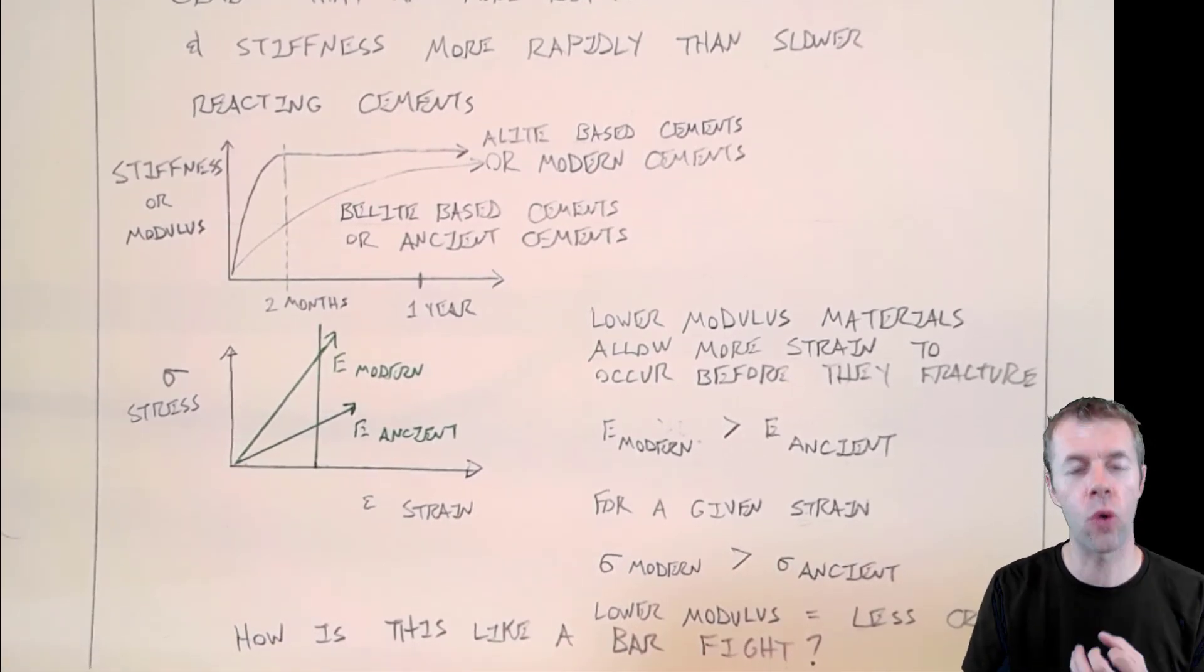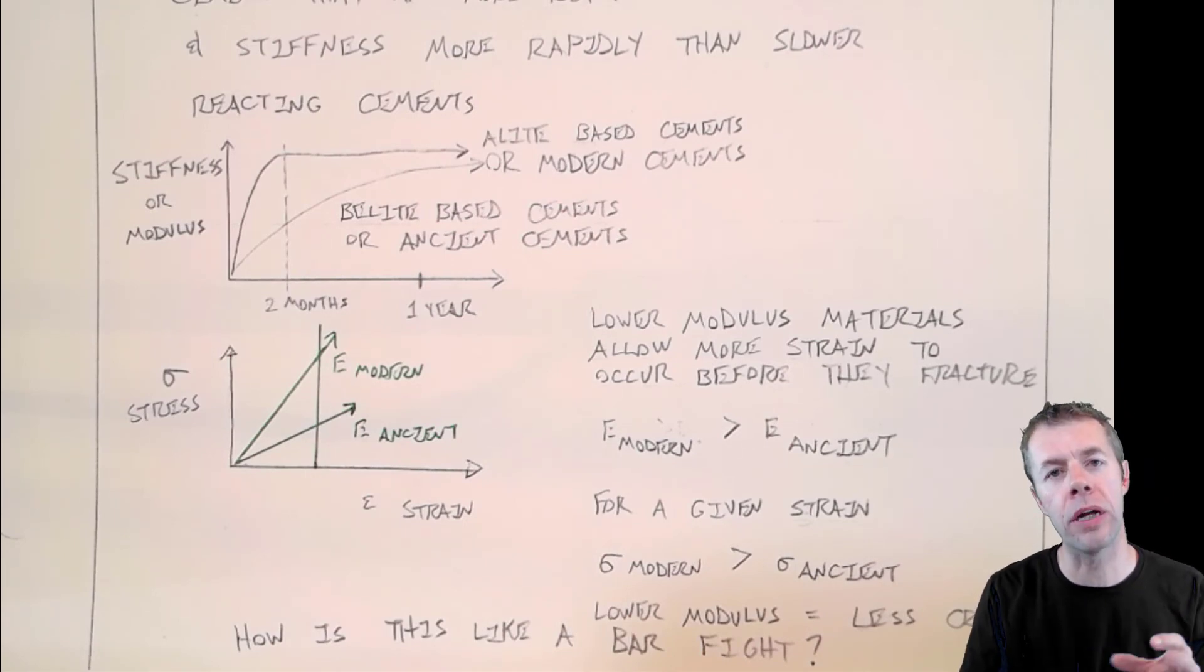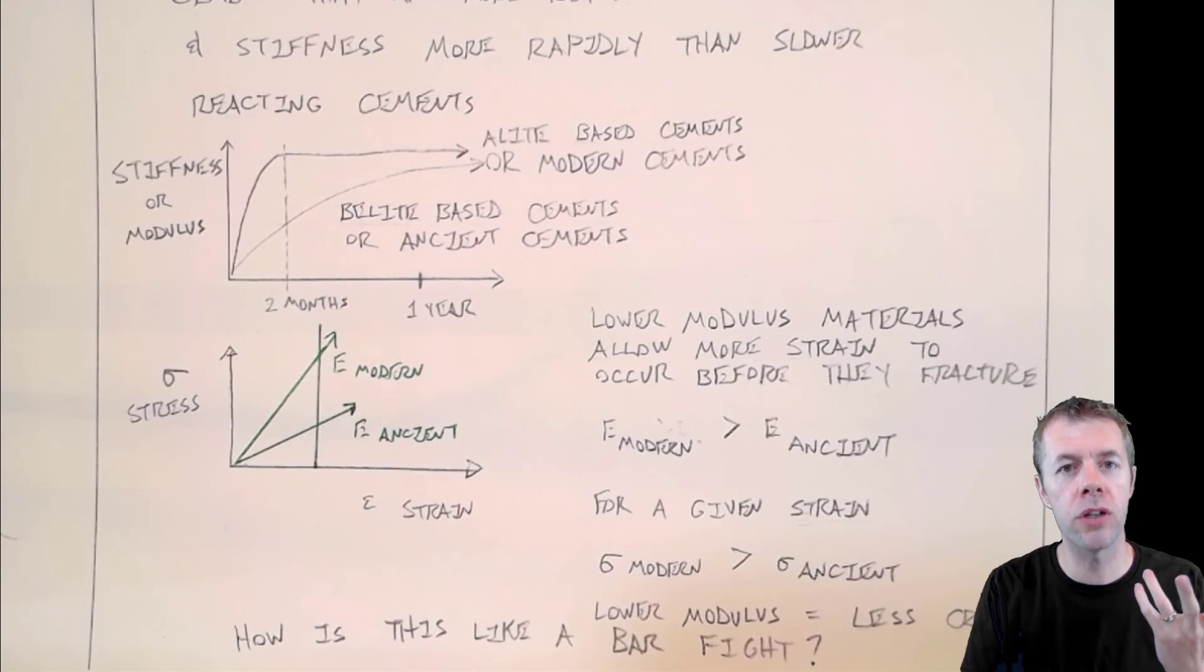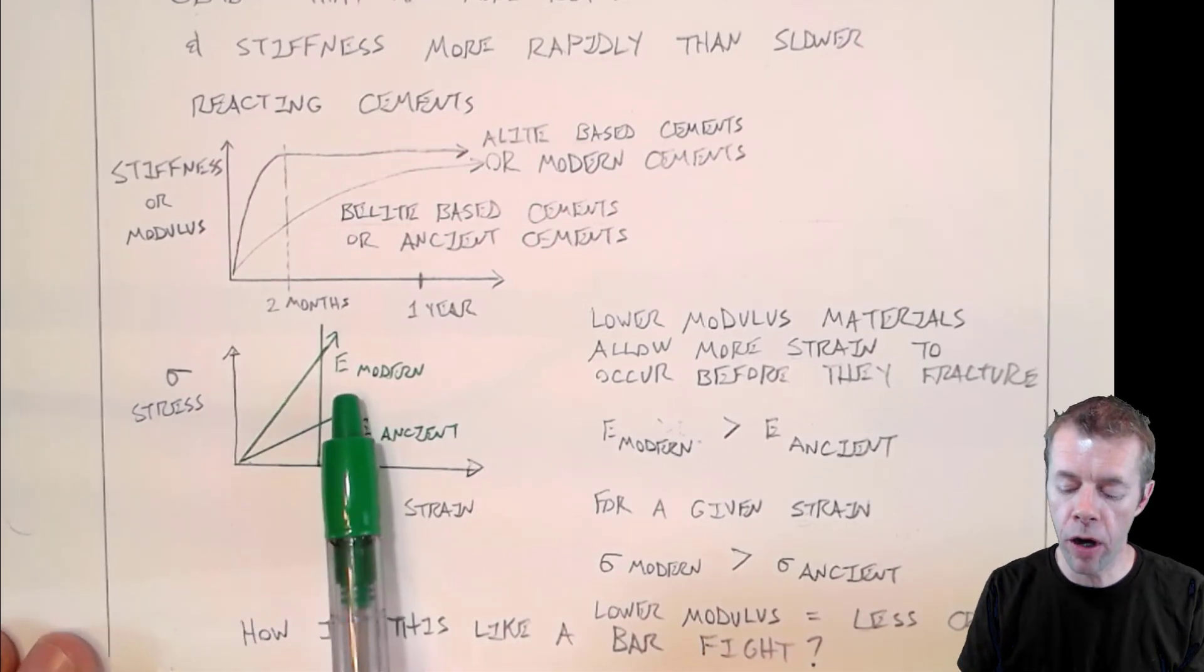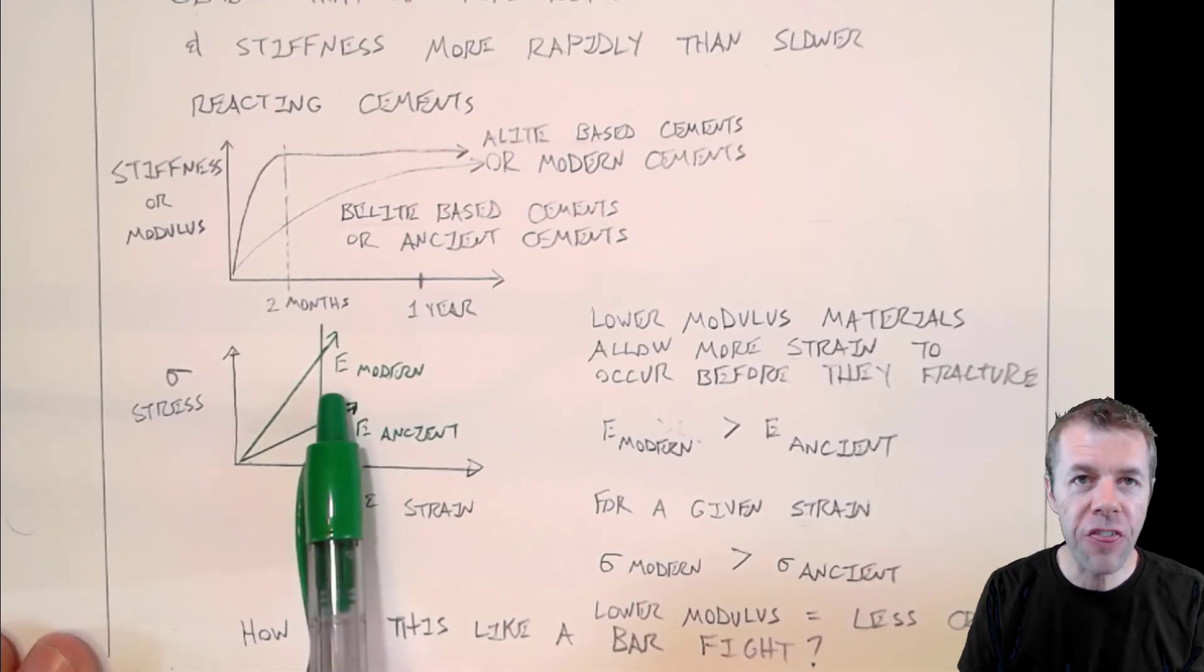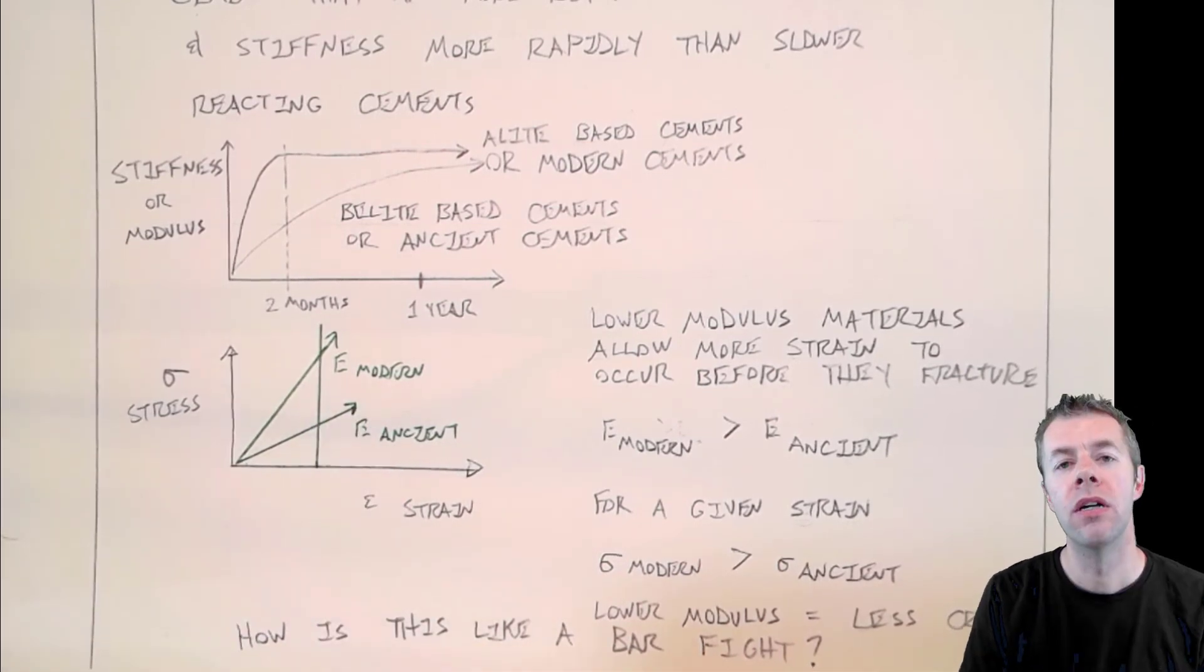Lower amount of cracking is good. Because cracks are like super highways for outside chemicals to get into our concrete, or water to cause freeze-thaw damage. Reducing cracks is a very good thing. And I've shown you here, with the modulus of modern versus the modulus of ancient, that anything we can do to reduce the modulus of our concrete, is going to help us produce less cracks.